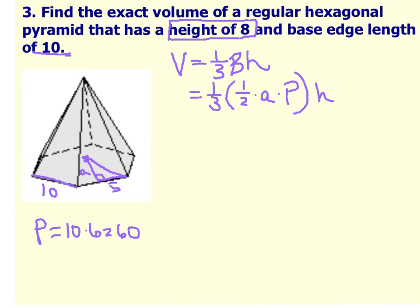Central angle, 360 divided by 6, and then divide that by 2, will give you the angle of this triangle, which is 30 degrees. So we know we're dealing with a 30-60-90 triangle. Therefore, if this side of the triangle is 5, then the apothem would have to equal 5 root 3. So now I'm going to plug all of this into the formula.